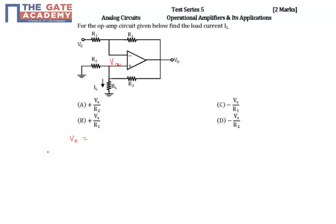So V0 equal to: due to inverting, the output voltage is minus R1 by R1 into Vs, plus due to non-inverting, the output voltage is 1 plus R2 by R2 into Vx.